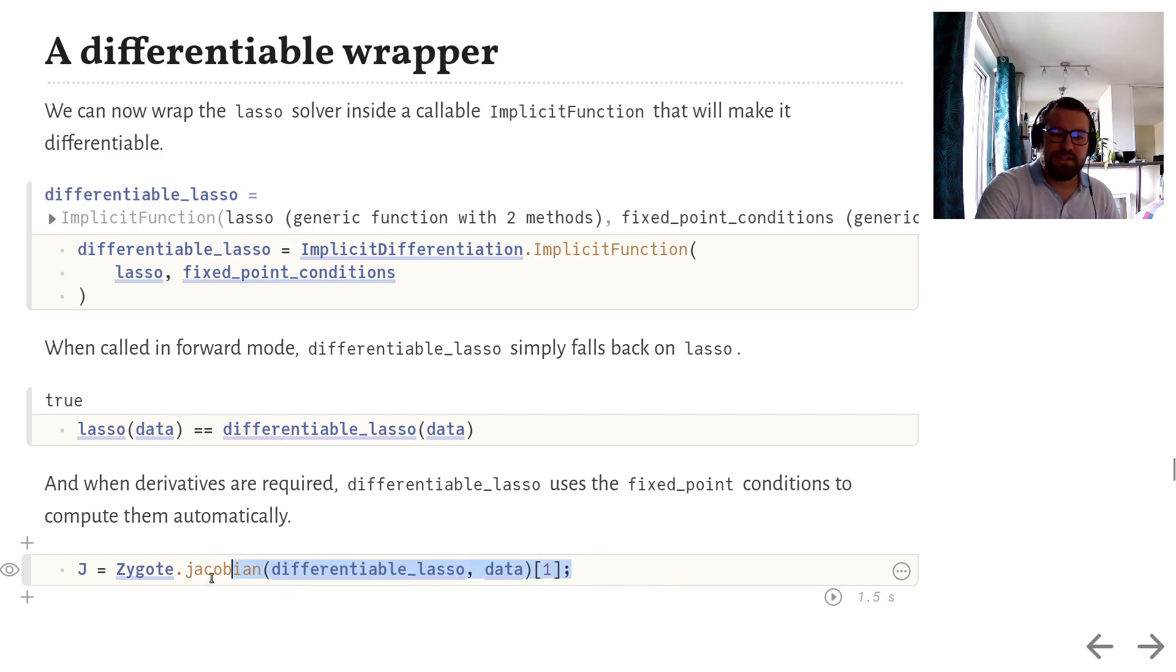So, as you can see, instead of throwing an error, Zygote.jacobian actually works this time.